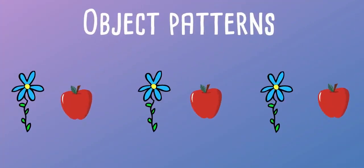In this object pattern, each flower is followed by an apple and this pattern repeats again and again.